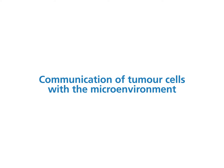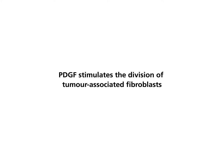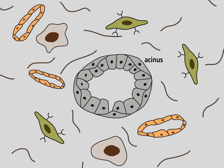Communication of tumor cells with the microenvironment. Tumor-associated fibroblasts are stimulated by PDGF. Epithelial cells make contact with the extracellular matrix, or ECM. The acinus of a mammary gland, shown here, is surrounded by connective tissue, which contains cells such as endothelial cells, macrophages, and fibroblasts.